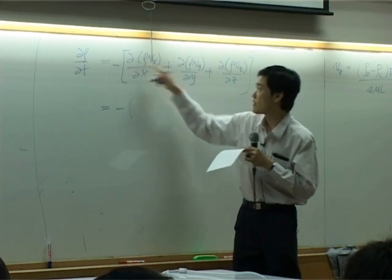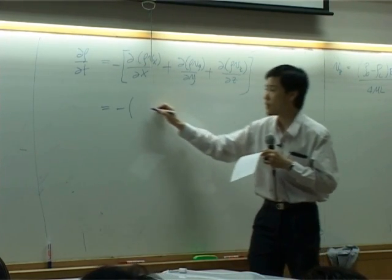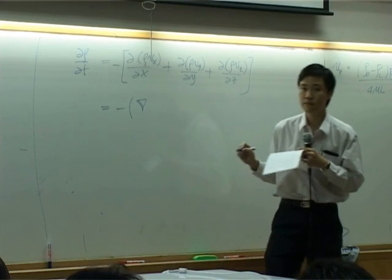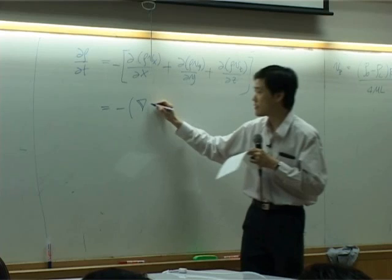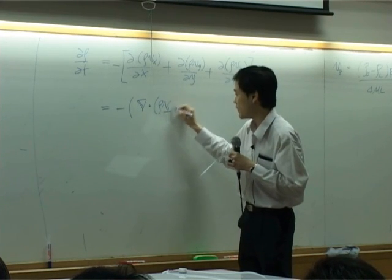One vector would be a vector of differentiation, which is del. The other vector would be a vector inside. So del dot rho v.